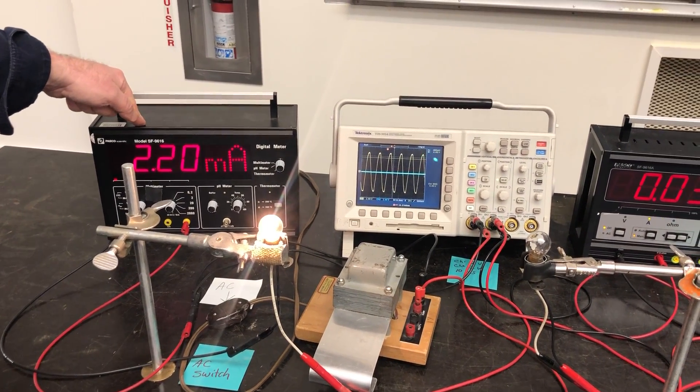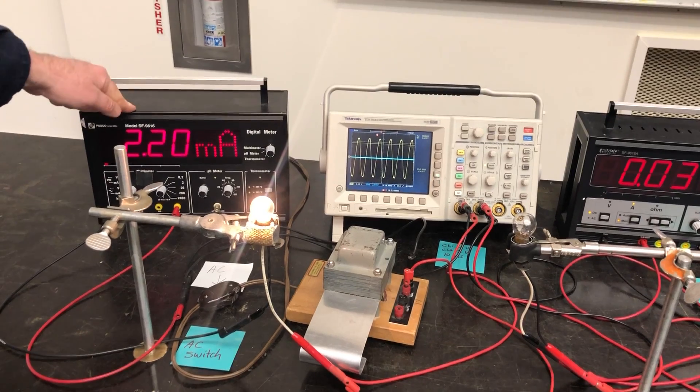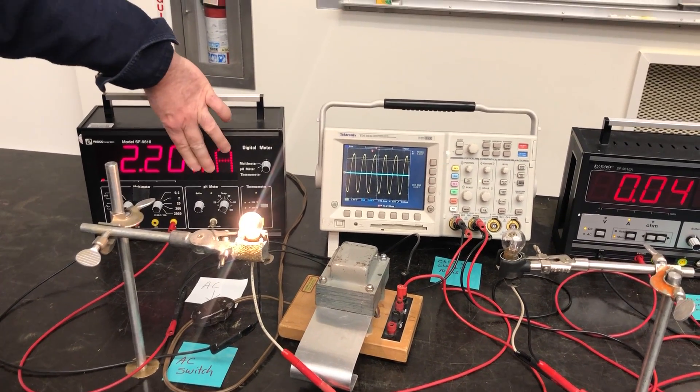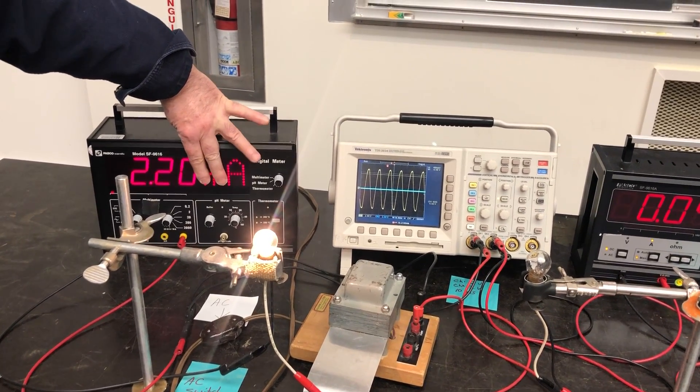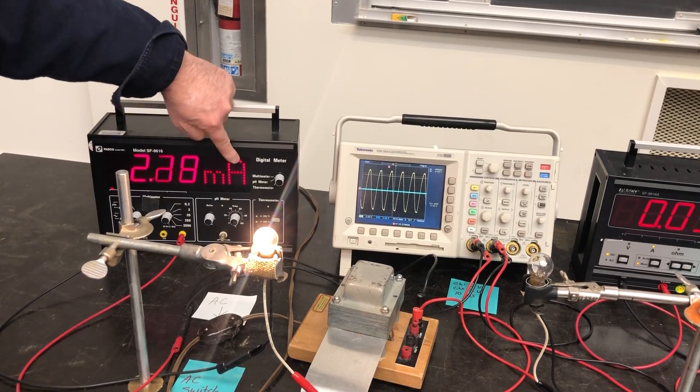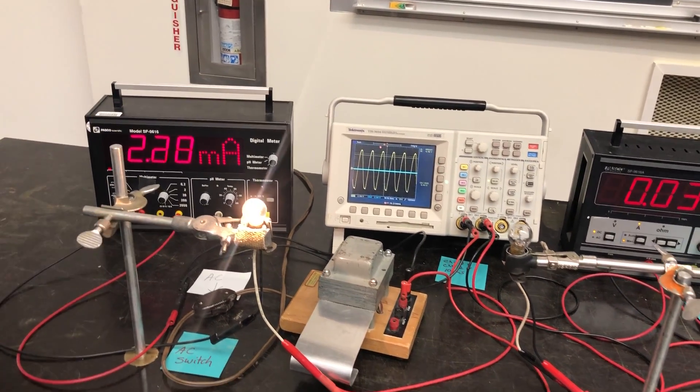And there's the AC current right here. Although this says milliamp, that should actually say amp. So it's 2.2 amps of AC going through here. I have a second light bulb over here,